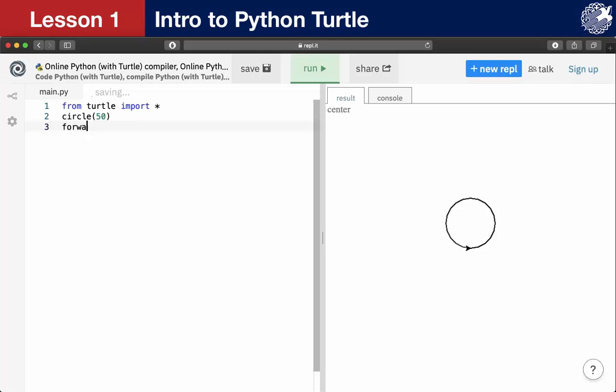After the circle command, it is clear that we must write the forward command. Let the distance be 30 pixels. Let's check it again. Everything is totally fine.